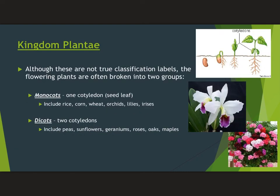The flowering plants are further broken down — unofficially — into two groups: monocots and dicots. Cotyledons, or seed leaves, are found within the seed and are one of the first things that pop out when the seed sprouts. Some seeds have one cotyledon — we call it a monocot — which includes rice, corn, and wheat as crop plants, plus many flowers people like to grow. Dicots have two cotyledons and include a lot of trees, some flowers, and some of our other crop plants.